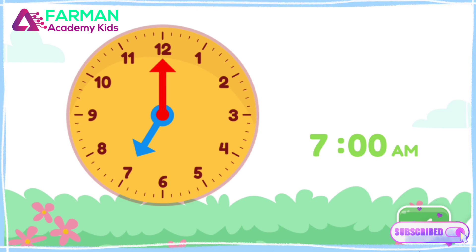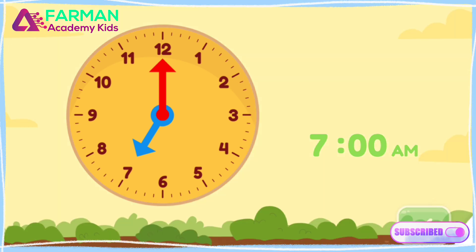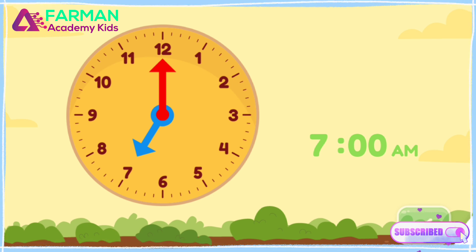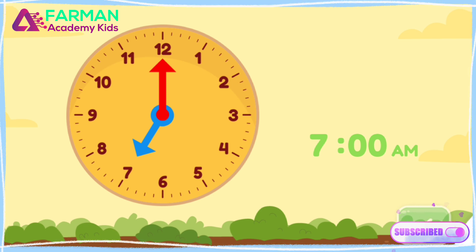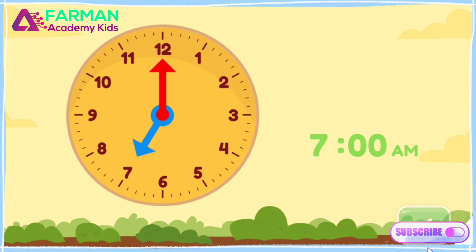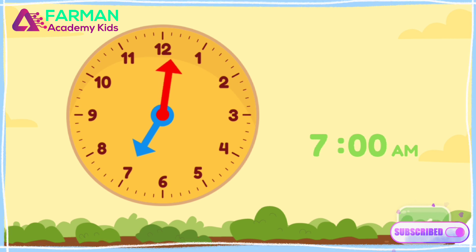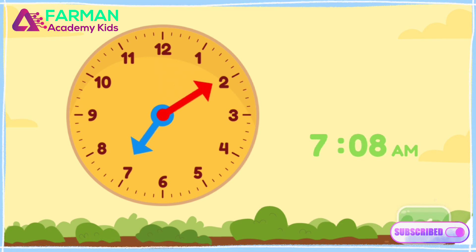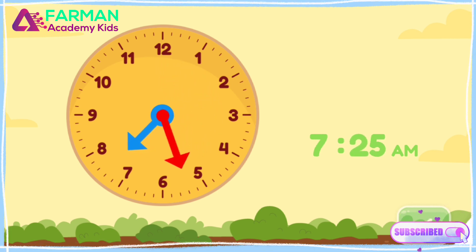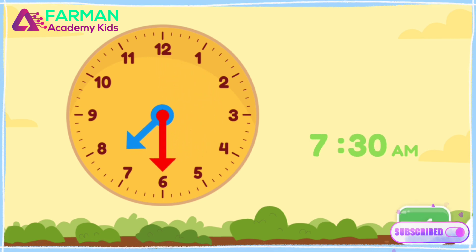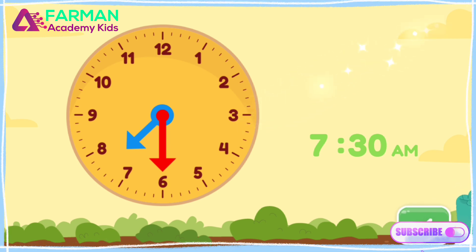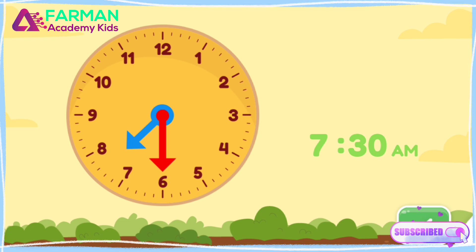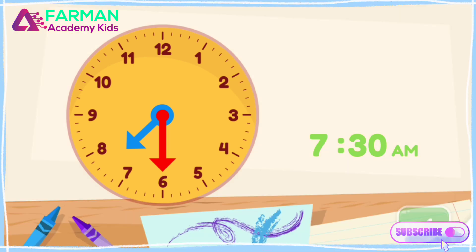Move the minute hand on the round clock to show 7:30 a.m. This is when I eat breakfast in the morning. You made the clock show 7:30 a.m. It's breakfast time.